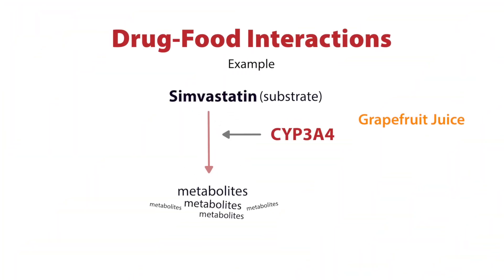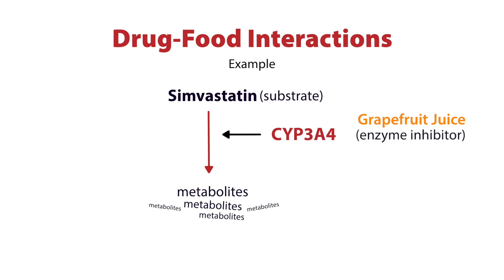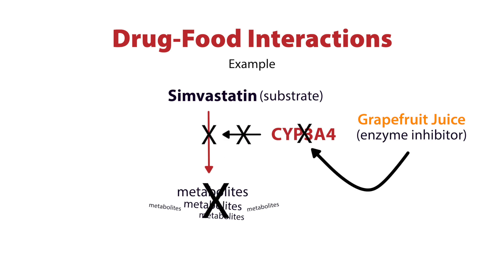Now, anything that interferes with CYP3A4's ability to metabolize the substrate has the potential for a drug interaction. Grapefruit juice — little innocent delicious grapefruit — is actually an enzyme inhibitor, meaning that after consuming grapefruit, CYP3A4 is inhibited. It can't do its job of metabolizing the statin cholesterol drug, and the statin just sits around in the bloodstream. If it just sits around in the bloodstream, it doesn't get broken down and eliminated, and the level of the drug in the blood increases.